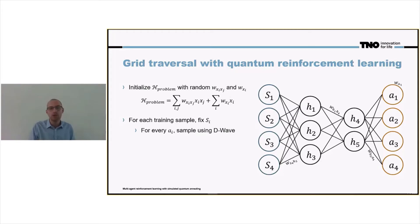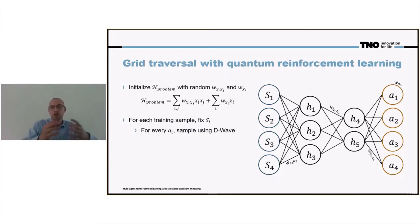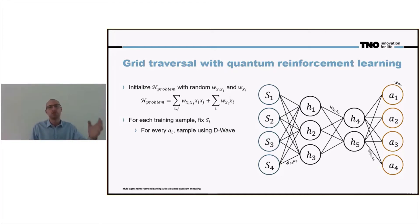How do we learn these nodes? We learn them by fixing a training sample S_i — fixing a location S_i. And for every action A_i, we sample the network. We sample the network using the D-Wave hardware backend or using simulated annealing.